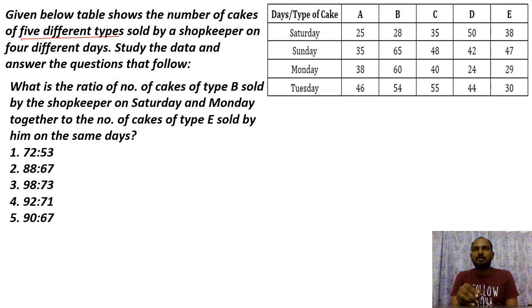First question: What is the ratio of number of cakes of type B sold by the shopkeeper on Saturday and Monday together to the number of cakes type E sold on the same days? B on Saturday and Monday: 28 plus 60, that's 88. Type E on the same days: 38 plus 29, that's 67. So the ratio is 88 to 67. Answer is option 2.